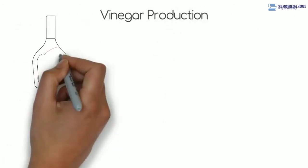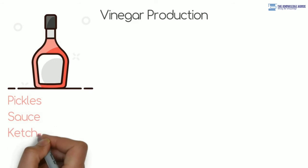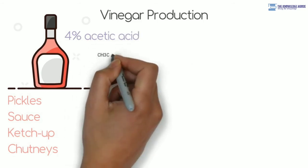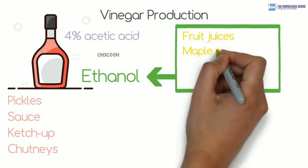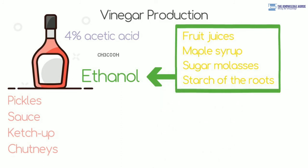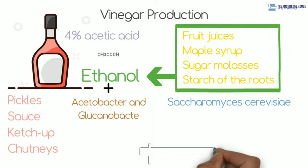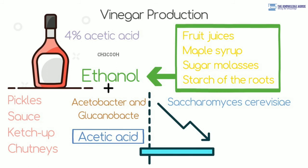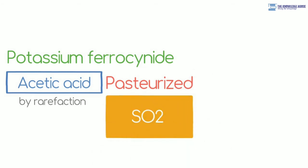Vinegar production. Vinegar is used in each country of the world to impart sour taste to food materials and for preservation of pickles, sauce, ketchup, chutneys, etc. Chemically, vinegar is 4% acetic acid, i.e. CH3COOH. Ethanol and alcohol is obtained by fermentation of carbon compounds like fruit juices, maple syrup, sugar, sugar molasses, starch of roots with the help of yeast, Saccharomyces cerevisiae. Mixture of bacterial strains like Acetobacter and Gluconobacter is mixed with ethanol for its microbial degradation. Acetic acid and other by-products are obtained through it. Acetic acid is separated from the mixture by rarefaction. Acetic acid is bleached with the help of potassium ferrocyanide. Then, it is pasteurized. Finally, very small quantity of SO2 gas is mixed to produce vinegar.